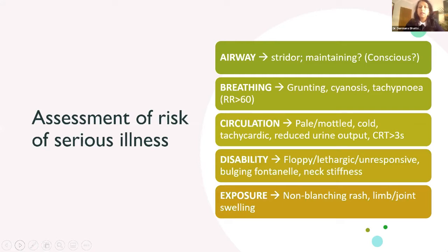B is for breathing: look for red flag signs such as grunting, which children make when really struggling to breathe, and evidence of central cyanosis. Look for tachypnoea — a respiratory rate above 60 in a child is a big red flag, though ranges differ by age. Look for increased work of breathing: tracheal tug, recessions, and head bobbing.